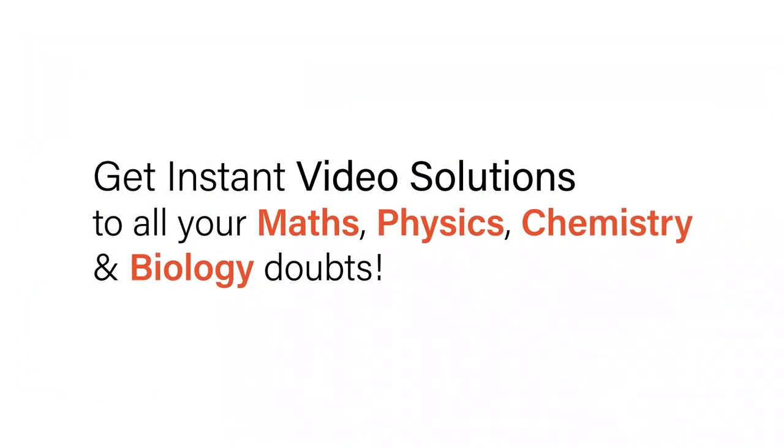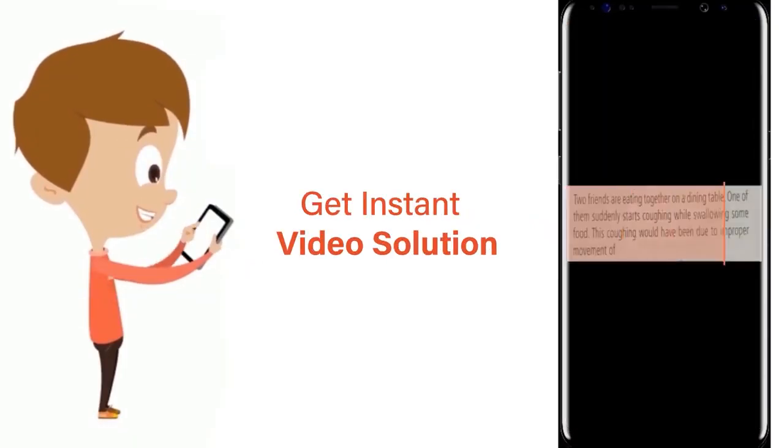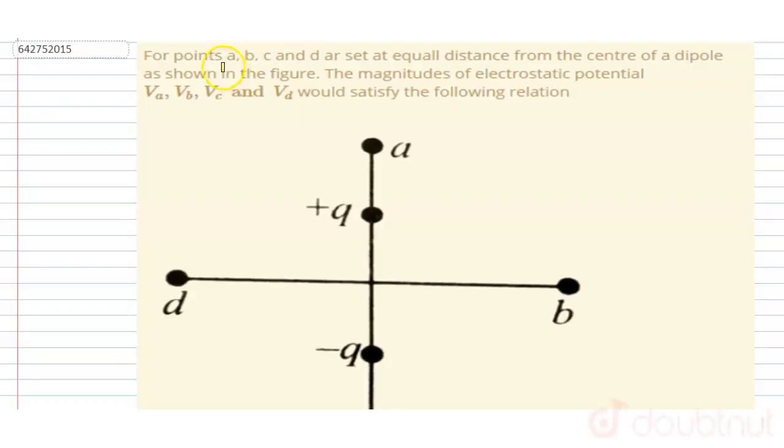With Doubtnut, get instant video solutions to all your maths, physics, chemistry, and biology doubts. Just click the image of the question, crop the question, and get instant video solution. Download Doubtnut app today. Hello everyone, four points a, b, c, d are at equal distance from the center of a dipole.